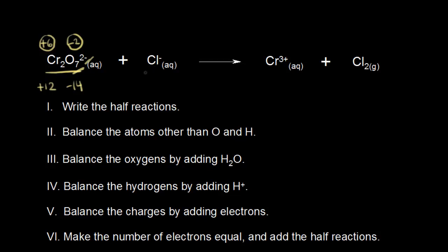Over here is the chloride anion, so the charge is negative 1, meaning the oxidation state is negative 1. The chromium ion is plus 3. And then finally, chlorine over here has an oxidation state of 0.